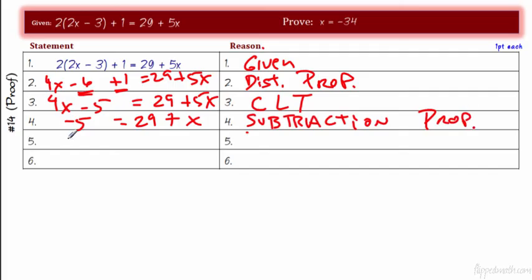Now what? Let's subtract 29. So we get negative 34 equals x. And that is the same reason, subtraction property. We're almost done because they look close. I'm going to switch the order. x is going to equal negative 34. Why can we switch it? It's the symmetric property.